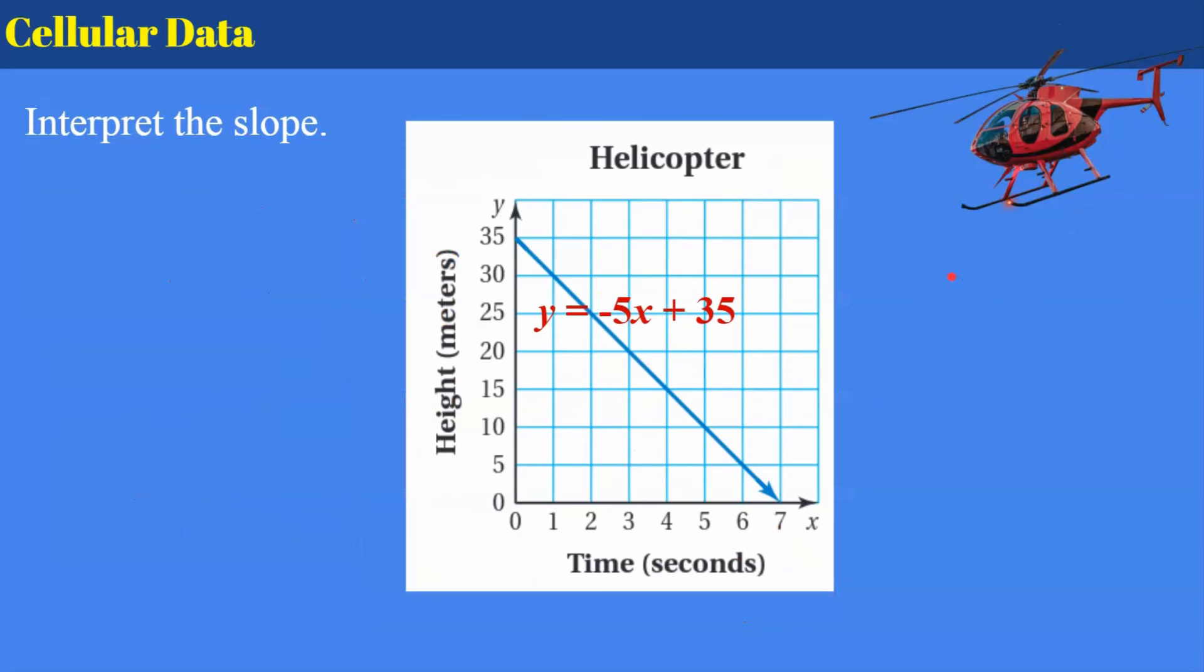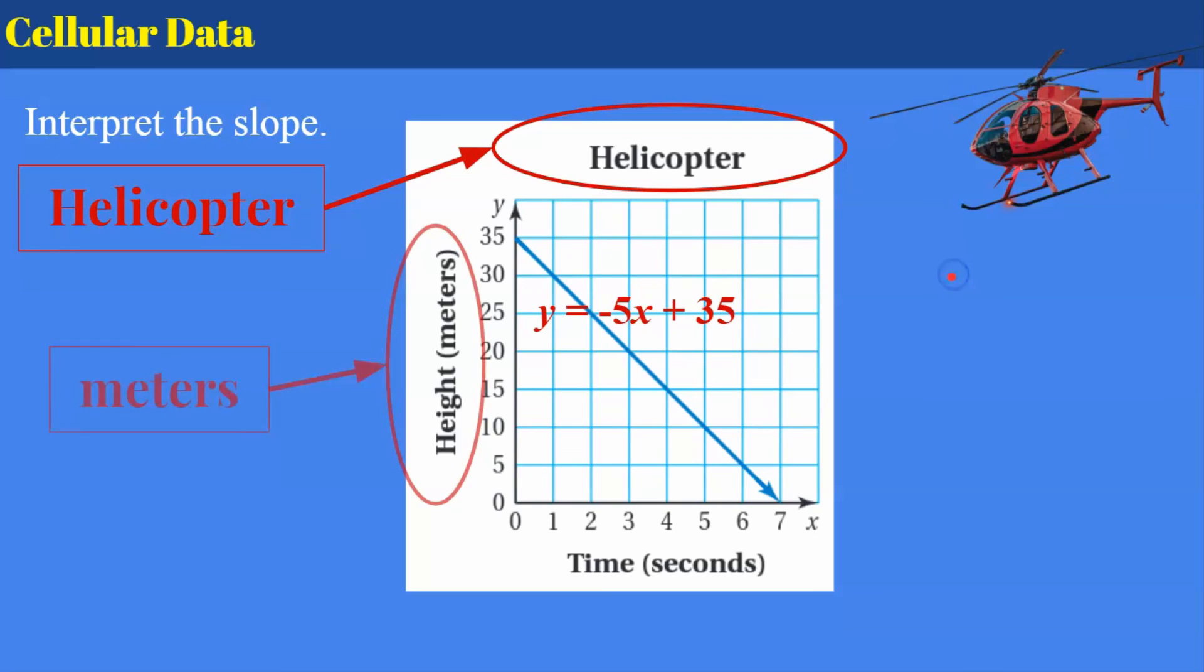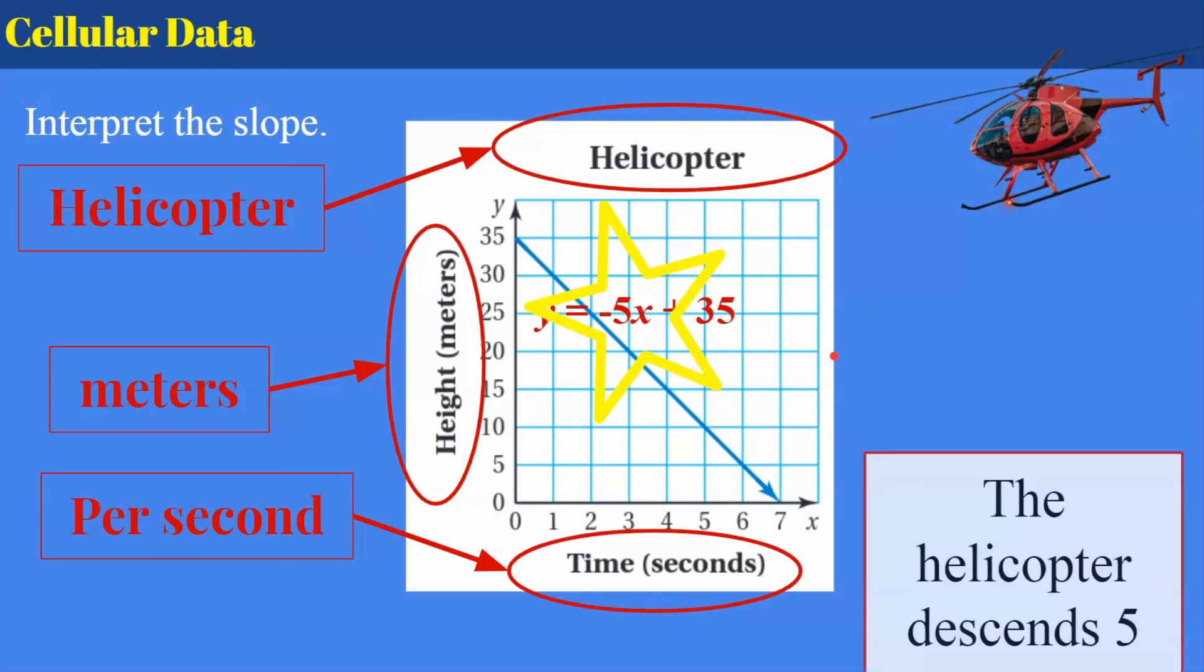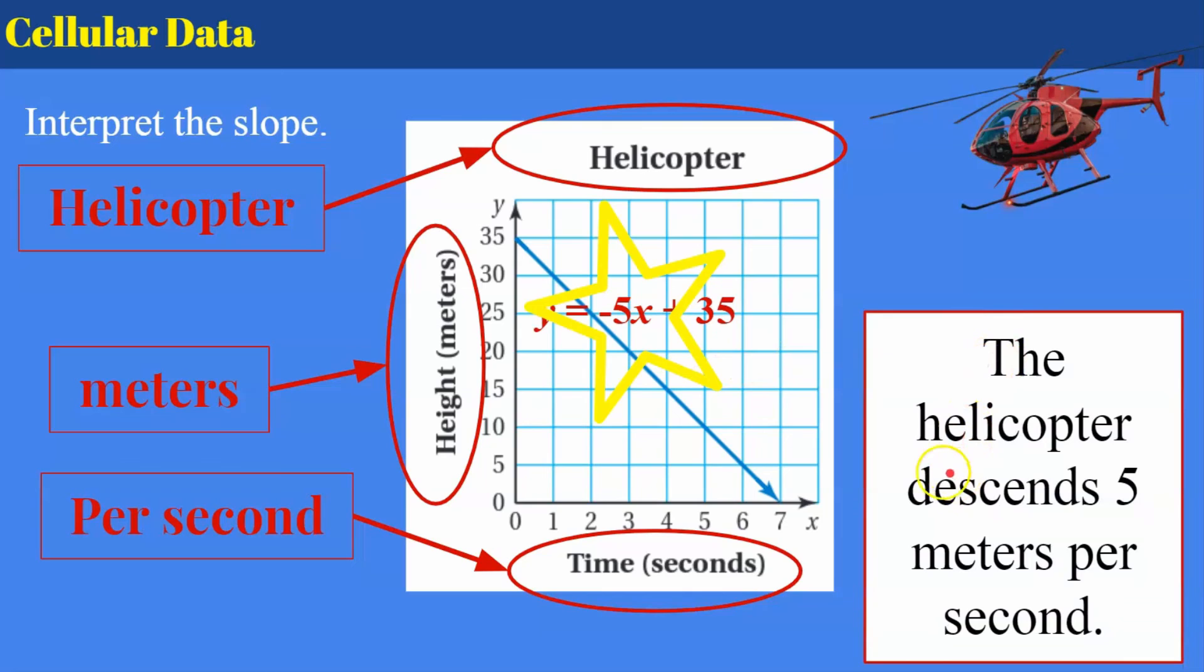All right, here's a helicopter. Please pause, interpret the slope, come back to check your work. Welcome back. Let's see how you did. So we're talking about a helicopter. It's height in meters per second. Our slope is negative 5. So we know that our helicopter is beginning its descent, and it's going to hit the ground here because its height will be 0. So my interpretation of the slope, the helicopter descends 5 meters per second.